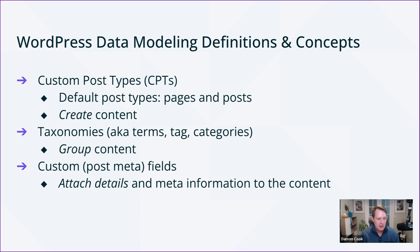To clarify: all the data modeling we're seeing — custom post types, taxonomies, custom fields — is available in WordPress natively. To extend and create these, you'd normally reach for code; there are APIs for it. But ACF makes it simple and elegant to create and assign them in the UI, which I'll demonstrate using a car automotive selling site.